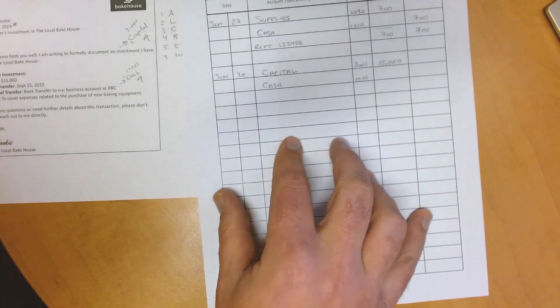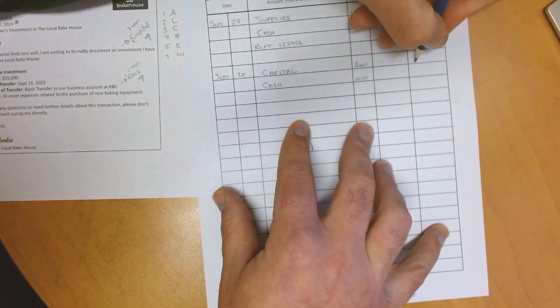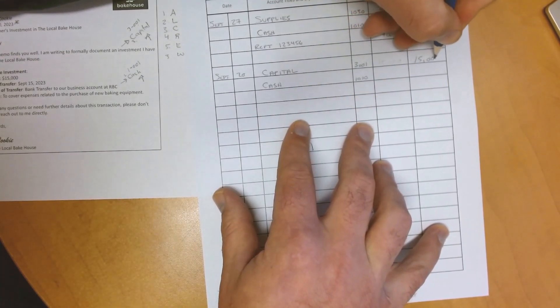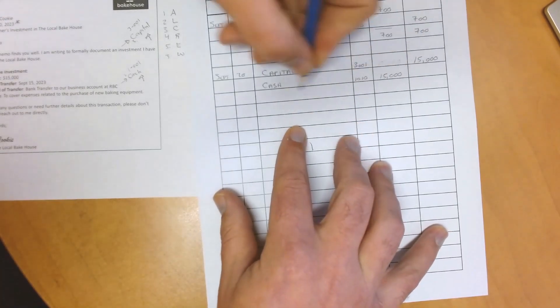I knew our cash went up, so if I had two debits we would not balance, and I knew I had to make the capital account a credit. In the end, my credit went first. But that is alright, and my journal is done!